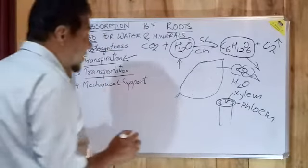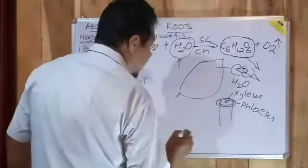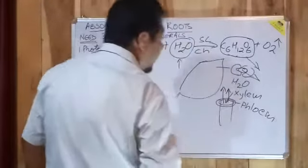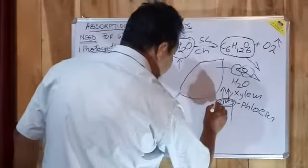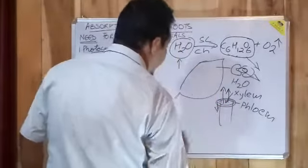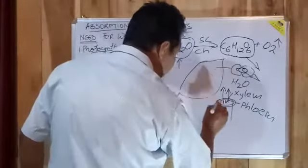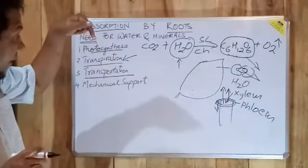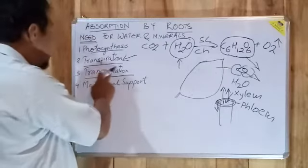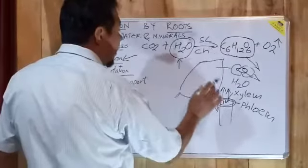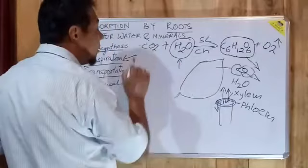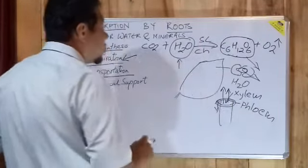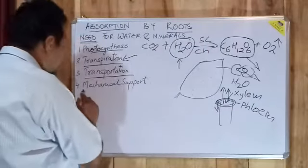Now what do this xylem and the phloem do? The xylem vessel conducts water up into the plant body, and the phloem vessel basically conducts manufactured food bi-directionally. That is, it can conduct up also, it can conduct down also. So transportation of materials, that is water and mineral salts from the plant as well as the glucose, takes place through this xylem and phloem.